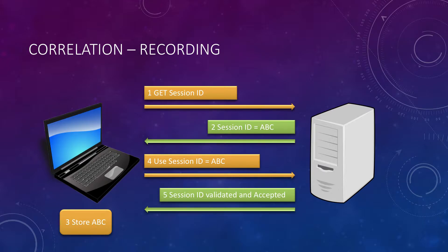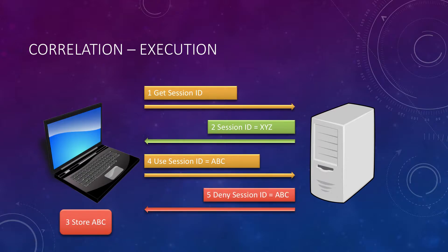We have those recordings in JMeter, but if we play the script right now, we're going to send a request for a session ID and the server is going to say your session ID is going to be X, Y, Z. But I have hardcoded the script to use the session ID ABC, so the server is going to say I deny the session because I don't recognize it — I don't know what ABC is. I gave you X, Y, Z and you're not using it. It's not going to work.